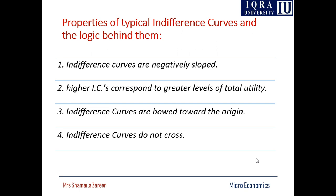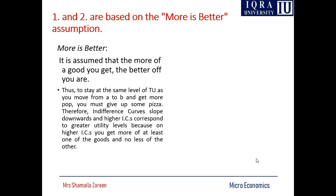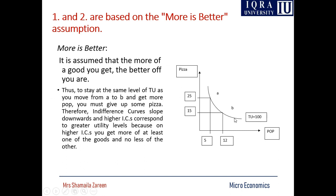There are some properties of indifference curves. First, indifference curves are negatively sloped, as you have seen. Second, higher indifference curves correspond to a greater level of total utility. Third, indifference curves are bowed towards the origin. Fourth, indifference curves do not cross. You can see from the diagram that indifference curves are negatively sloped — this shows the property of diminishing marginal rate of substitution.